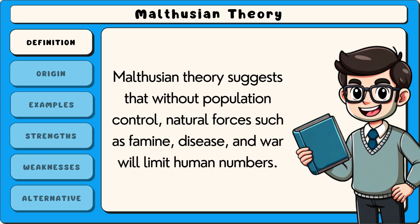Malthusian theory suggests that without population control, natural forces such as famine, disease and war will limit human numbers.